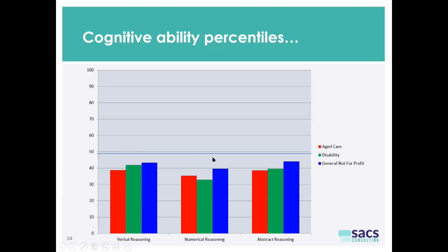At a glance, the first thing you can see is that all of these sectors are below population average for professionals in Australia. When we norm these results against professionals in Australia, these professionals in this sector are below population average.